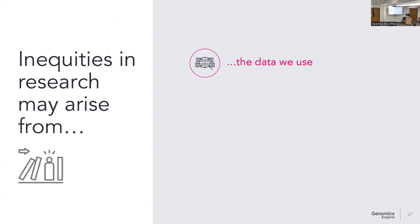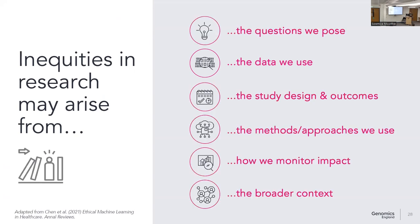Diverse data is clearly a very important component — really addressing the data biases we have at Genomics England and more broadly in the UK. But we also want to be cognisant that there are many ways in which biases have been introduced, and from a research context, there are many points in the research pathway where bias can be built. That's been quite important scaffolding for our programme — to think about the whole way research is produced, research culture, research outputs, and what we can do at every point of the research pipeline to make it more equitable.